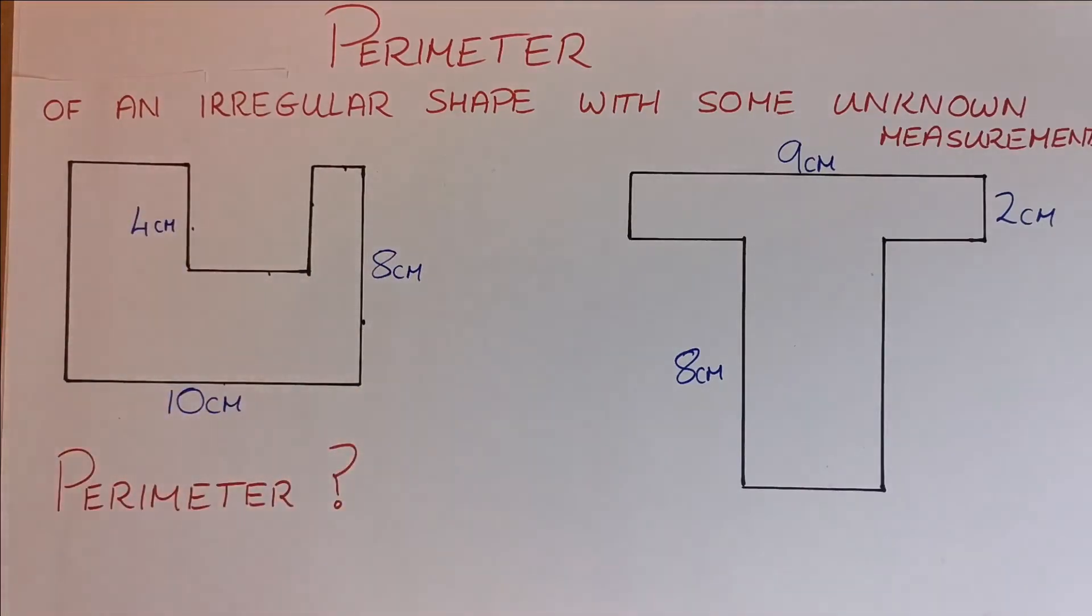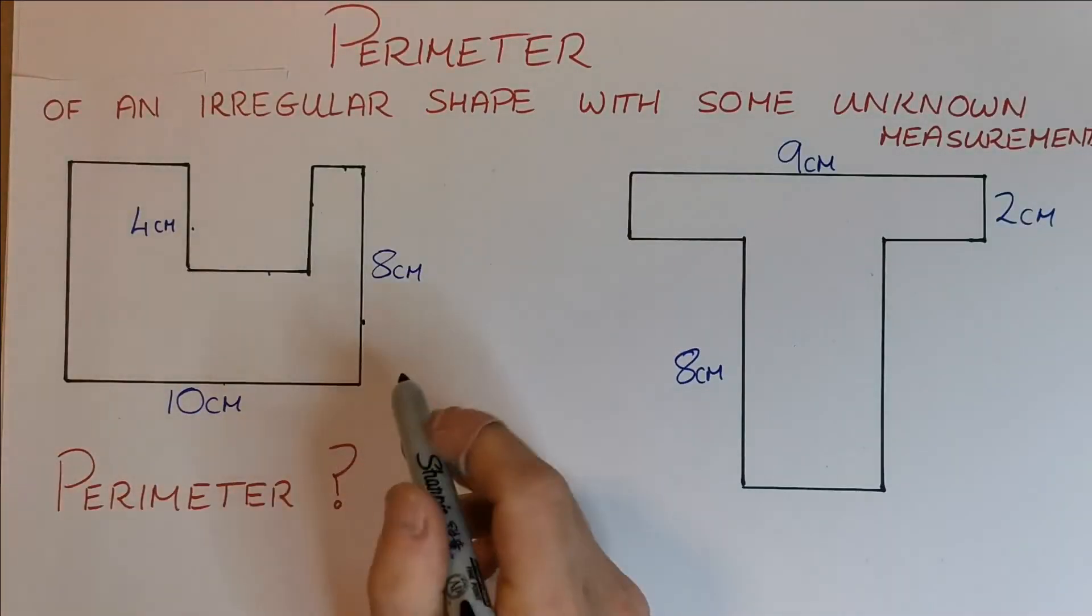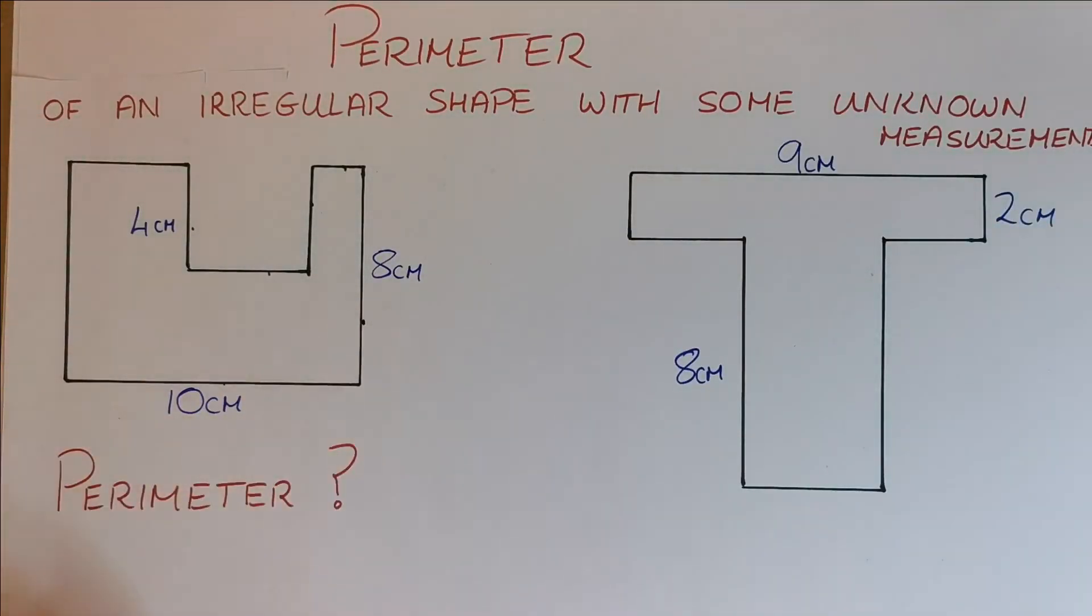So I have 8 lengths that I have to know in order to get the perimeter. Is there anything I can tell straight away from looking at what I already have? Well, I can.